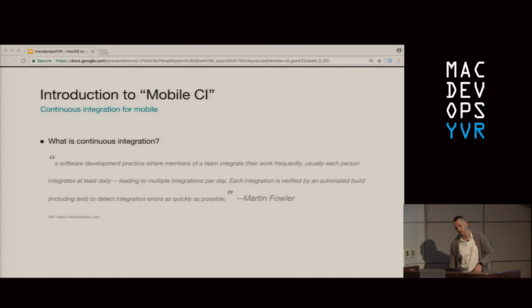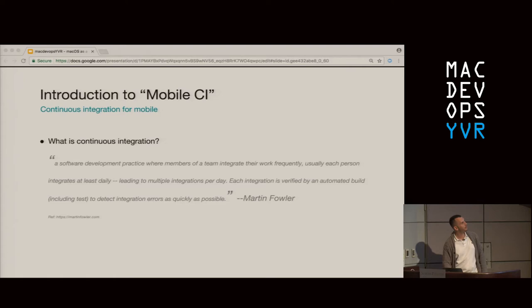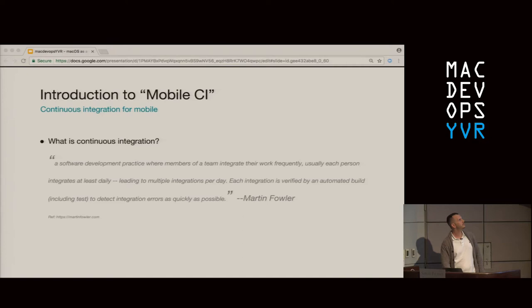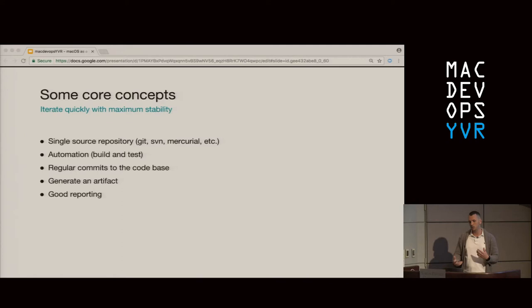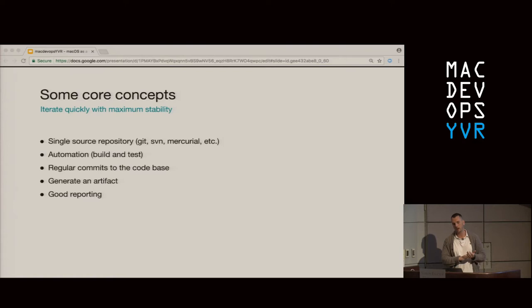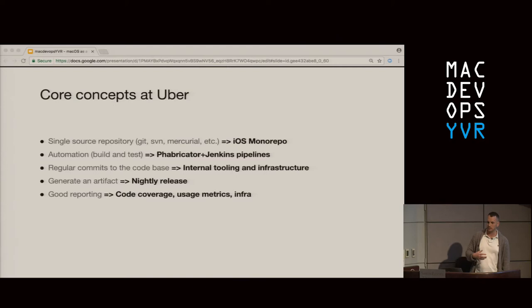Let's define continuous integration. Martin Fowler is a renowned software developer and champion of software development practices — he also happens to be the top result on Google. He defines CI as: a software development practice where members of a team integrate their work frequently, usually each person integrates at least daily, leading to multiple integrations per day. Each integration is verified by an automated build, including a test, to detect integration issues as quickly as possible. The core concepts all CI systems should follow include maintaining a code repository in source control, automatically building and testing your code, making sure there are regular commits, and being able to get good metrics and reporting from the system.